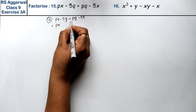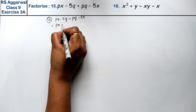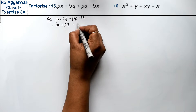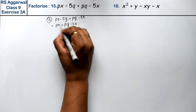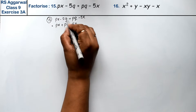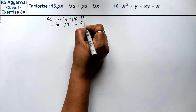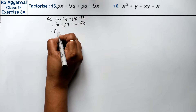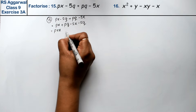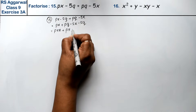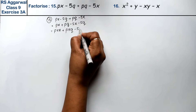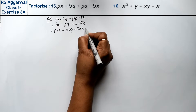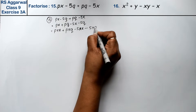We have to put px with pq, then minus 5x minus 5q. Because there is a term before x, so here is also minus 5q. Now we get p into x plus p into q, minus 5 into x, minus 5 into q.